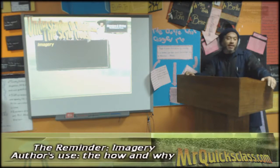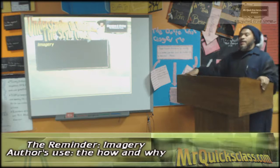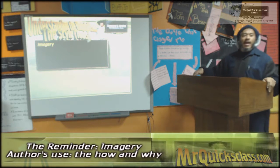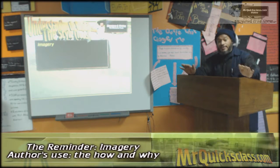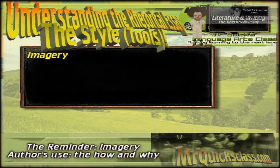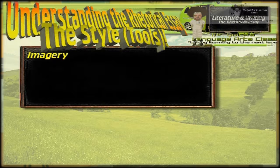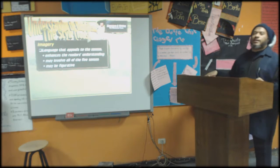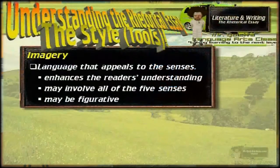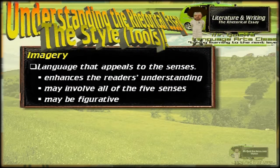Henry David Thoreau uses a lot of imagery. He has to put us there. It's not enough for him to tell us he was there — he wants us to be there also. Now, yes, this is his style, but this style is not unique to him, especially when writing about nature. Nature writers have to put you there. It's not enough that they were there; they want you to be there also. So they're going to use a lot of imagery, language that appeals to the senses. They want you to hear it, smell it, see it, feel it. They want you to experience it, not just read about it. They want you to get lost in it.